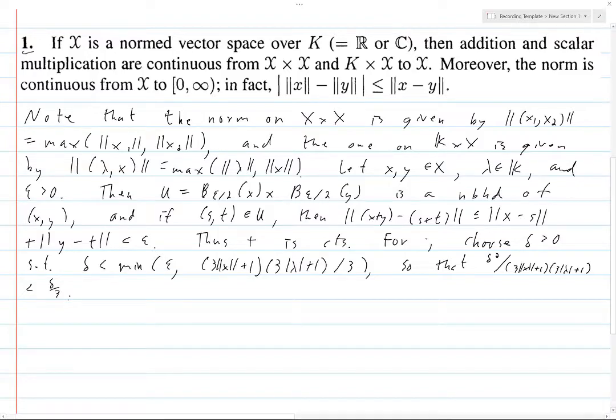Right. Because if delta is less than this thing on the right here, we definitely want delta to be less than epsilon, because that's how we're going to get our estimate. We want the thing to be less than epsilon.